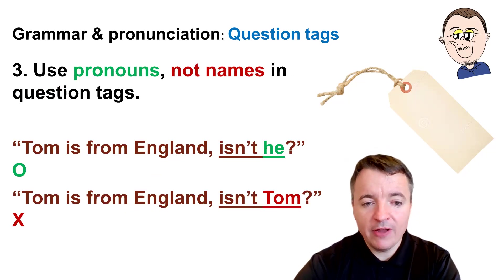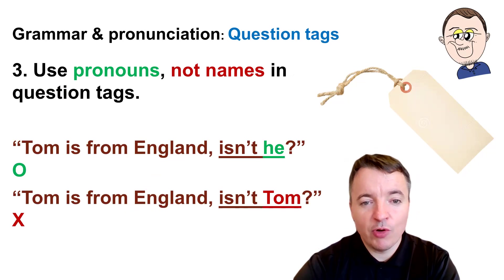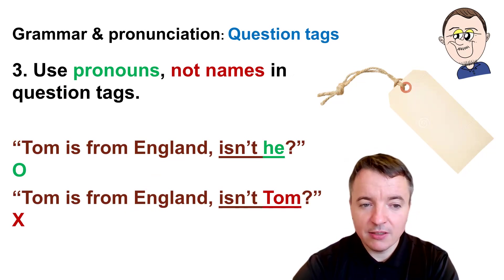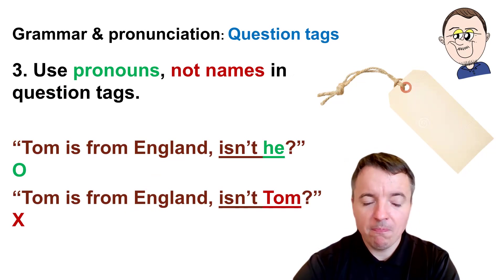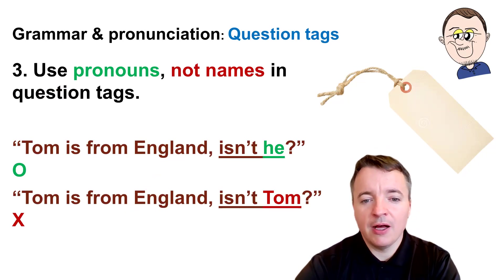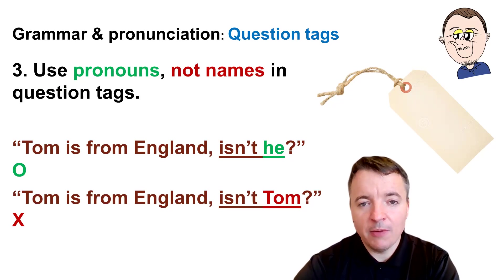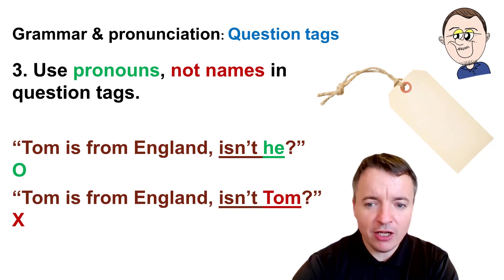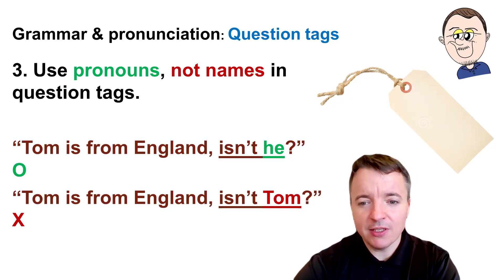Remember, if we're talking about people, use pronouns — not names — in question tags. Thomas is from England, isn't he? Not: isn't Tom. So use the pronoun he, she, they — not names. That's the same for places and any proper names too. China is great, isn't it? — not 'isn't China'.